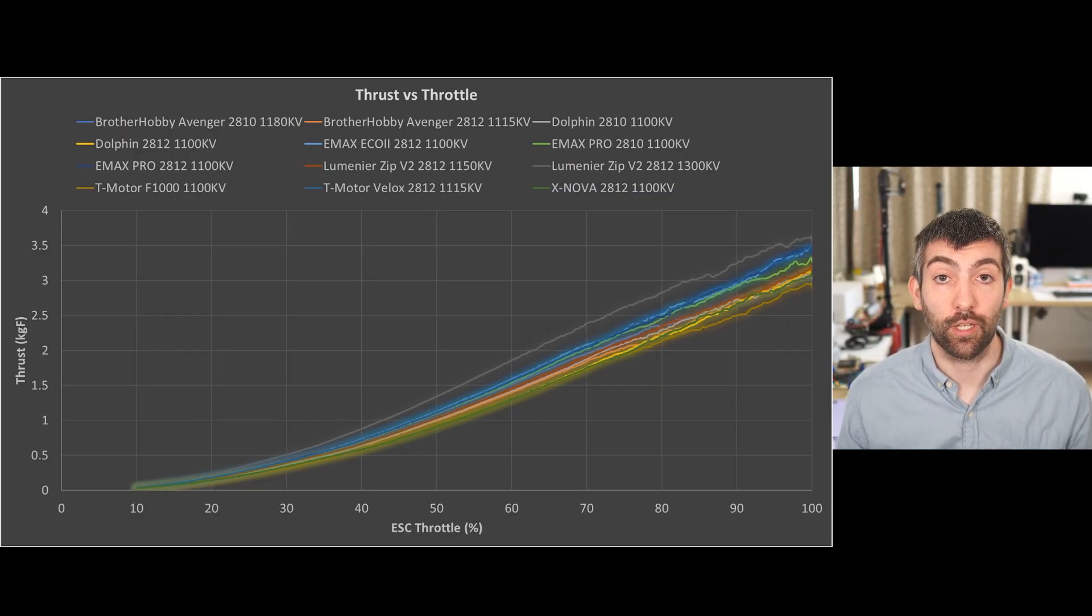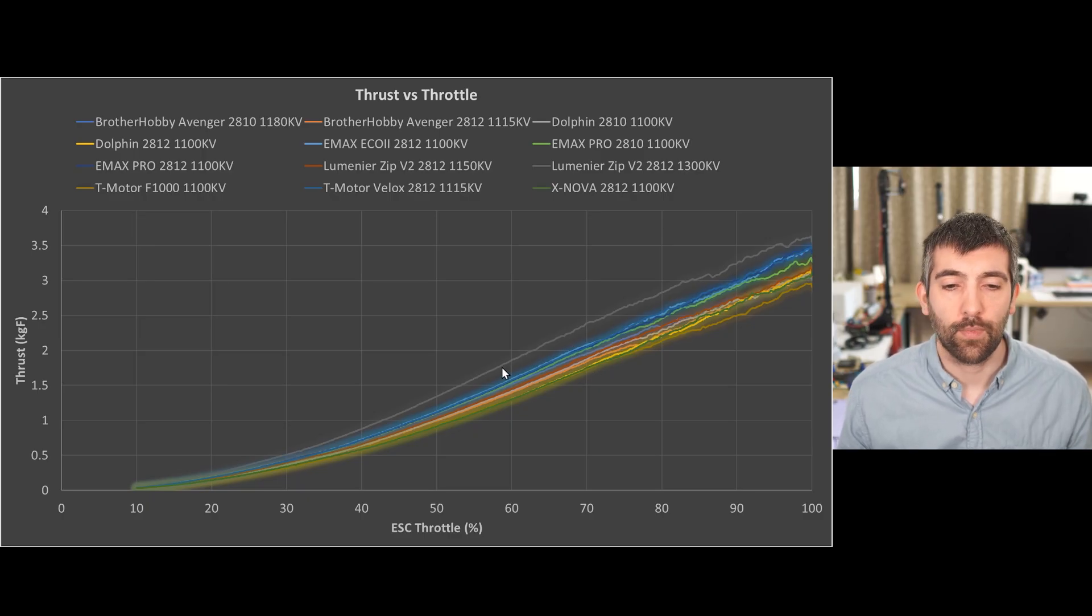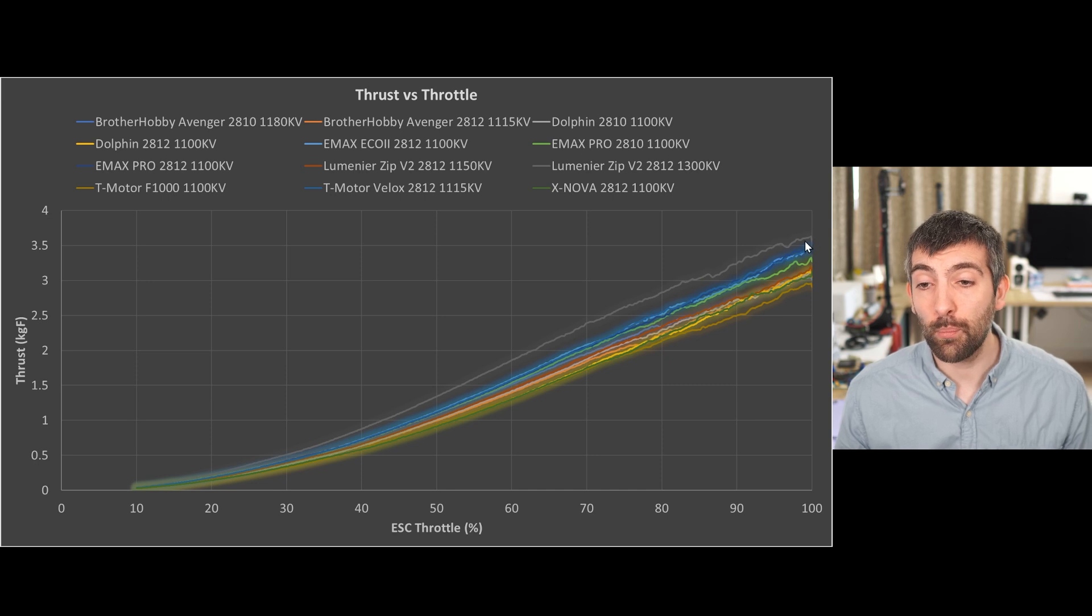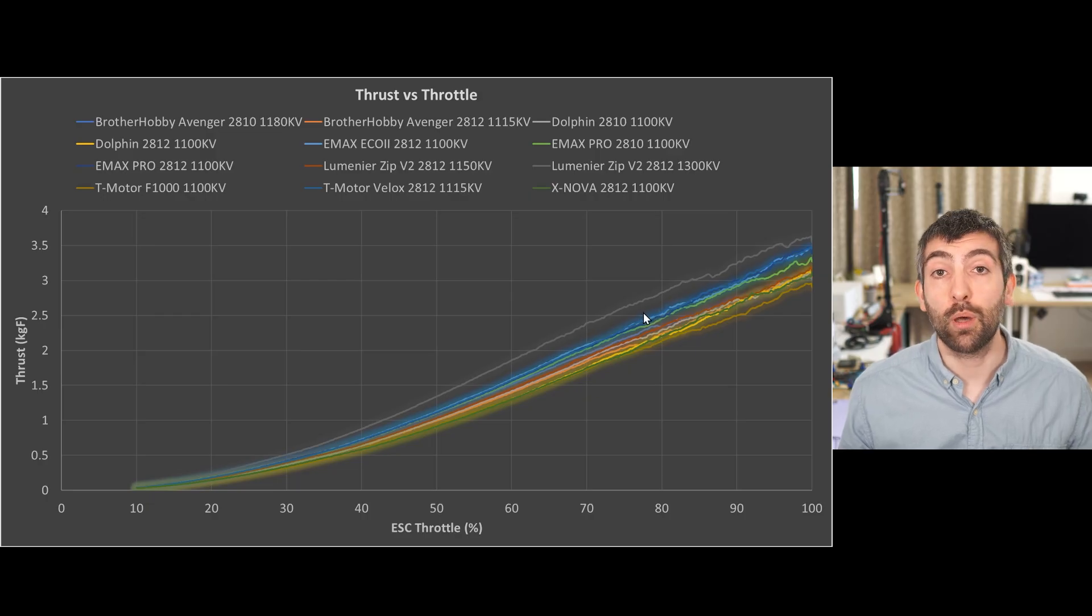Now let's look at the thrust versus throttle curve. Here we're ramping the throttle from 10 to 100% over about 10 seconds and you can see that we have a big spread in thrust delivered, although pretty much all of the motors have a very similar shape to the thrust versus throttle curve, so they all are going to have a similar throttle feel. The one standout is the Lumineer Zip V2 1300 kV. This is as we would expect for a motor with a significantly higher kV. It's generating more RPMs and more thrust, particularly in that mid throttle region. But at higher throttle you can see the improvement it has over the other motors starts to reduce. That's very typical for motors that have slightly too high a kV for the prop you're trying to drive.